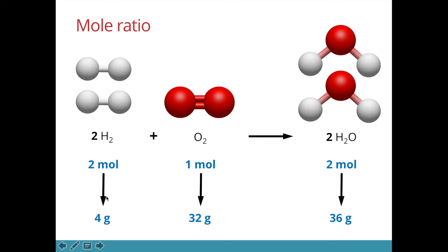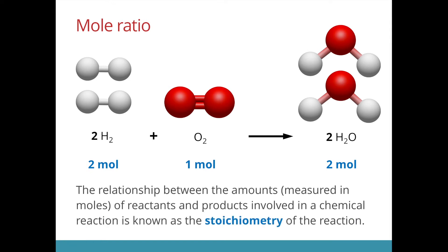If we were to convert the number of moles into mass, you can see that these numbers in front — 2 is to 1 — do not represent the mass ratio, but they represent the mole ratio. Again, the mass is conserved because the total mass of the reactants will be the same as the total mass of the products. So if I were to give you the mass of hydrogen, you would be able to use this equation to find the mass of water produced. This relationship between the mole ratio of reactants and products is also known as the stoichiometry of the reaction.